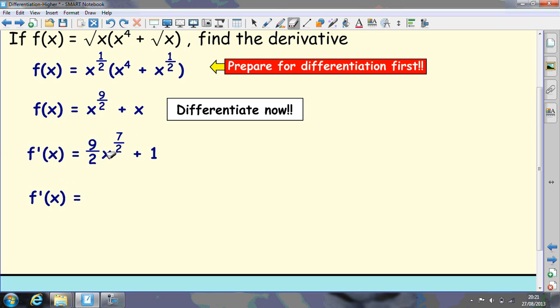Now the bottom value is your root. So that's the square root of x to the power of 7. So this is your root and that's your power. So it's (9/2) times the square root of x⁷ plus 1. And that's us done.